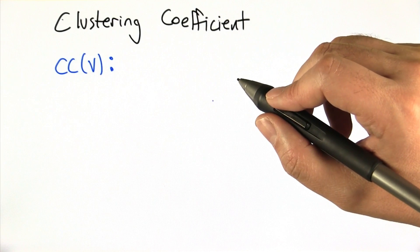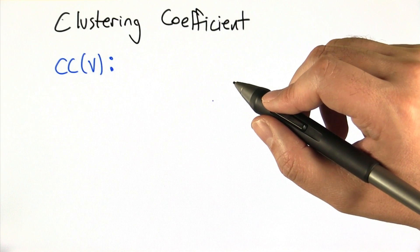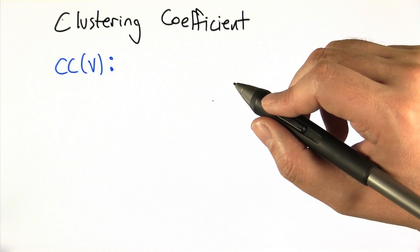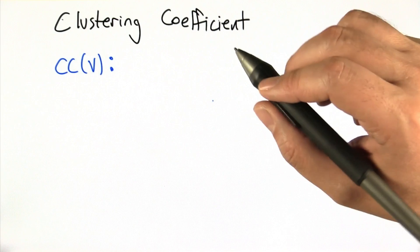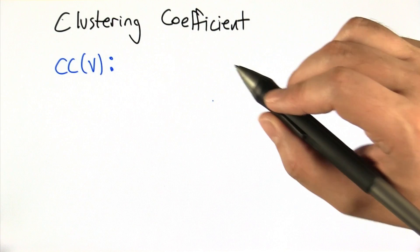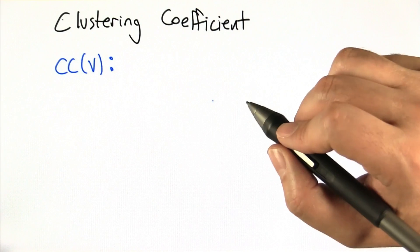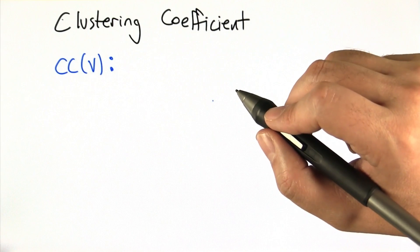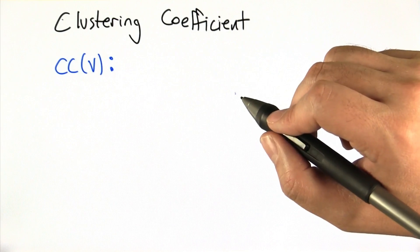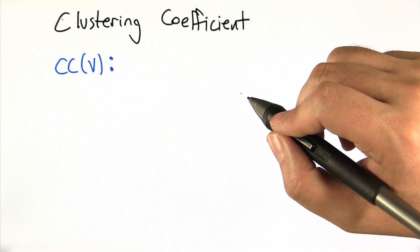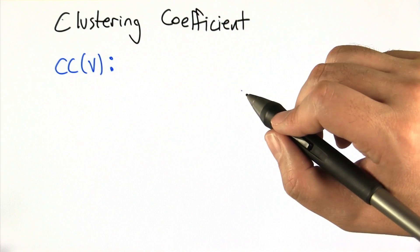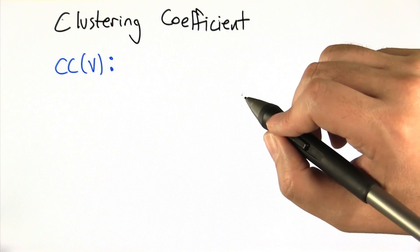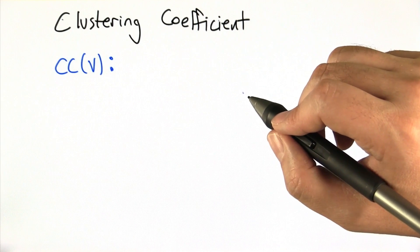That's all I'd like to say about path lengths for now. Next I want to focus for a little while on the notion of a clustering coefficient. You might be less familiar with this notion of clustering coefficient than you are with paths and graphs, so let's go through how this is often defined.